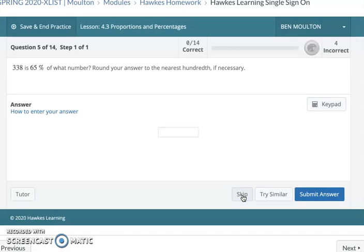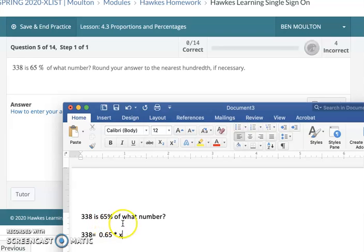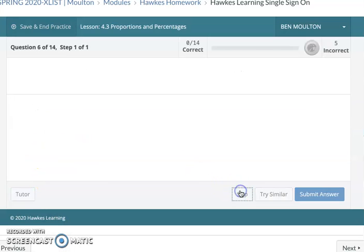338 is 65% of what number? Let me work with this one for just a second. What I would do on this one is just write it as you see it. 338 is means equals, 65% turn that into a decimal, means multiply what number, call it some variable x. So if you write it as an algebraic equation, you're looking at 338 equals 0.65x. To solve this, we would divide both sides of the equation by 0.65. So whatever 338 divided by 0.65 would be your answer.